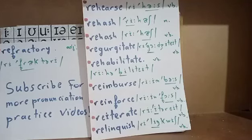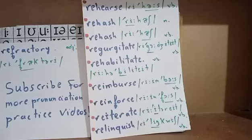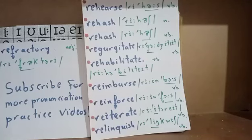Reiterate — four syllables with stress on the second syllable 'i'. Say: reiterate, which means to repeat. That's reiterate. Then move on to the penultimate word, which is relinquish — stress on the second syllable 'link'. Say: relinquish.